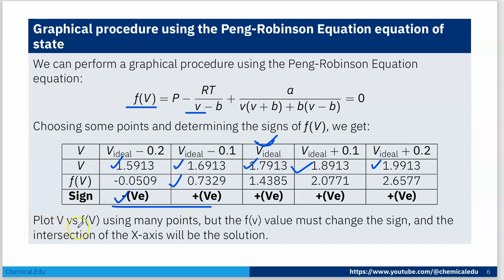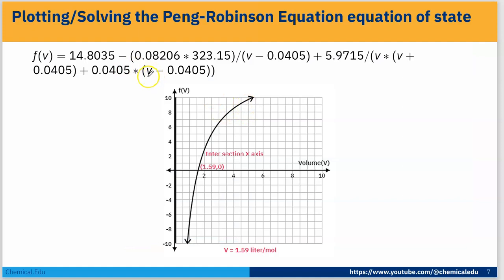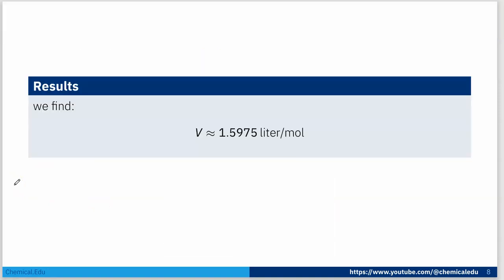Now plot V versus f(V) using many points. The f(V) value must change sign, and the intersection of the x-axis will be the solution for V. Taking different values of V and plotting, the intersection point is 1.590. So the molar volume is 1.5975 liters per mole.